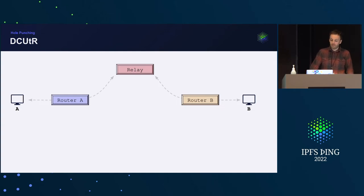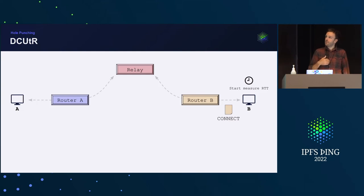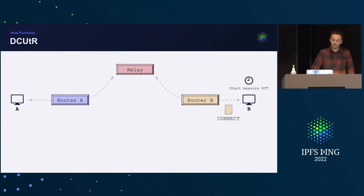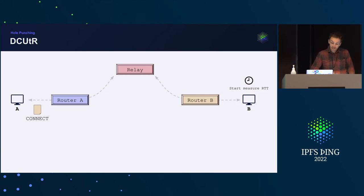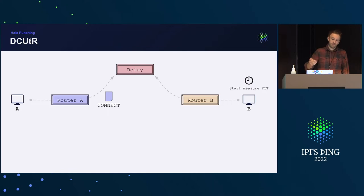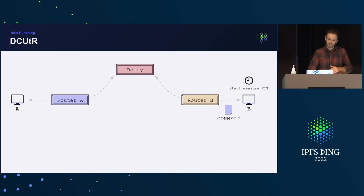The DCUTR protocol works as follows: peer B opens a stream and sends the first message, called a Connect message, which contains all of peer B's publicly reachable IP addresses for the hole punch. Peer B also starts a timer to measure the round-trip time. This Connect message is routed through the relay to peer A, who receives it and sends back its own Connect message containing its publicly reachable addresses. When this reaches peer B, B stops the timer and now knows the RTT.